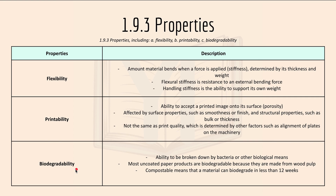Biodegradability is the ability of a material to be broken down by bacteria or other microorganisms. Most uncoated paper products are biodegradable because they are made from wood pulp. Compostable means a material can biodegrade in less than 12 weeks. Biodegradability is important in determining whether a product is recyclable or not.